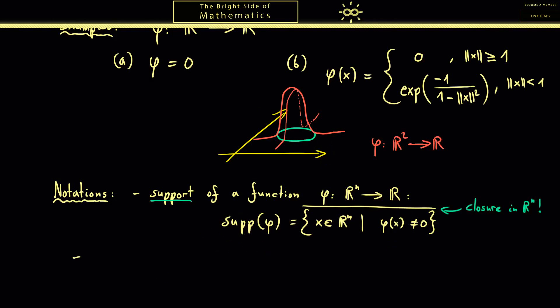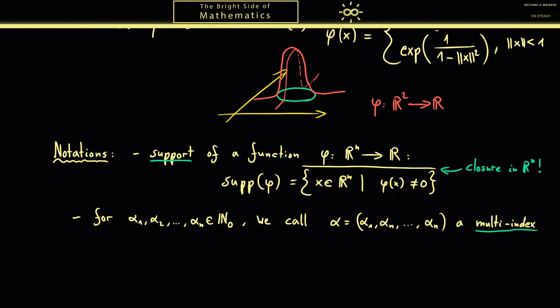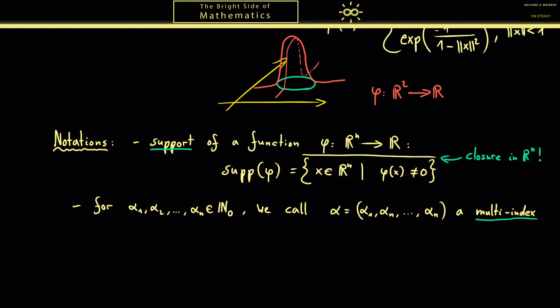Now for the next part I want short notations for the partial derivatives. For this the multi-index notation is very useful and we just choose natural numbers α_1 till α_n where we also include zero. Putting these numbers in the tuple we call this α then just a multi-index. Such a multi-index α is very helpful because now we can define the symbol D^α. In this D^α there are all the information for the partial derivatives.